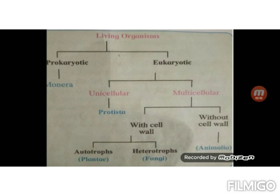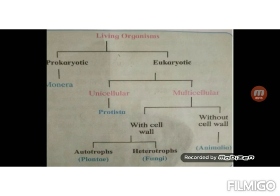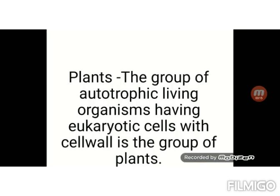Heterotrophs means depending on others for their food. Fungi are coming in this category. We human beings are also heterotrophs but we come under the category of organisms without cell wall. Now you can define the plant by looking at this chart: plants are autotrophs with cell wall. They are multicellular with eukaryotic cells. The group of autotrophic living organisms having eukaryotic cells with cell wall is the group of plants.